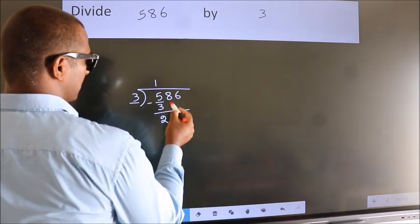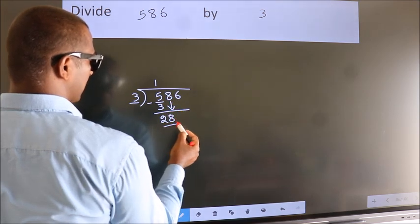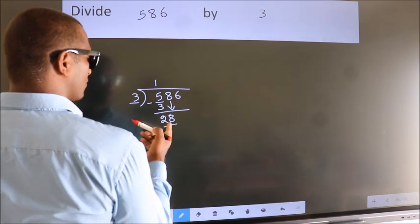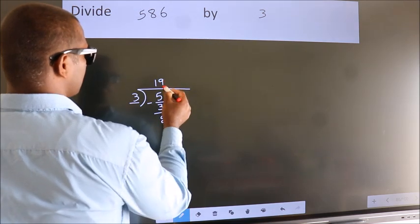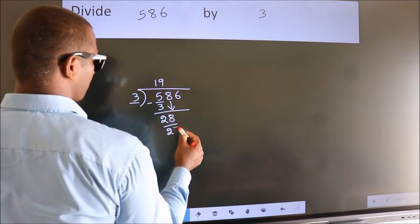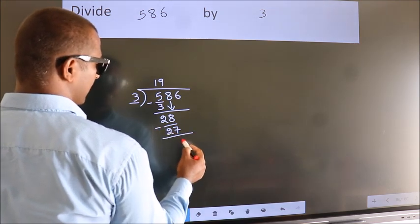After this, bring down the beside number, so 8 down, so 28. A number close to 28 in 3 table is 3 times 9, which is 27. Now we subtract, we get 1.